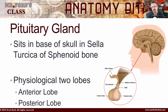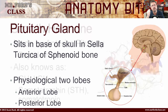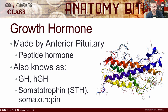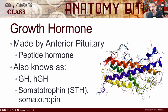The pituitary gland is actually divided into two sections physiologically: the anterior lobe and the posterior lobe. The growth hormone, which we're looking at in this video, is made in the anterior — the front part — of the pituitary. It is considered a peptide hormone, also known by a whole bunch of other names. You might see it as GH, or labeled as HGH, or called somatotrophin or somatotropin, or even abbreviated STH. Basically, we're talking about the same thing: growth hormone.